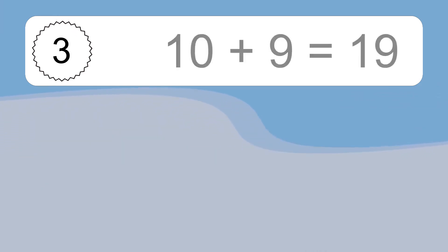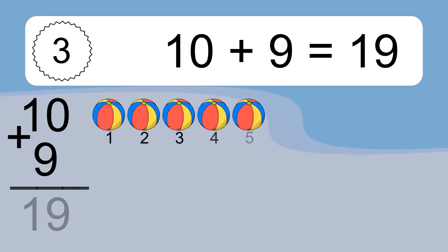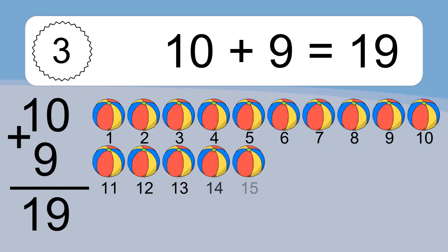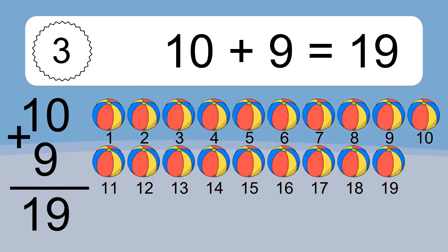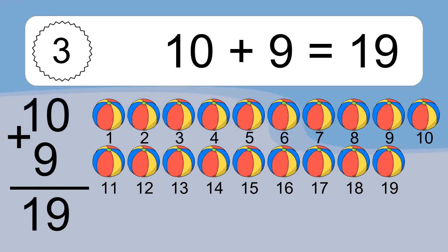10 plus 9 equals 19. Let's count it: 1, 2, 3, 4, 5, 6, 7, 8, 9, 10, 11, 12, 13, 14, 15, 16, 17, 18, 19.